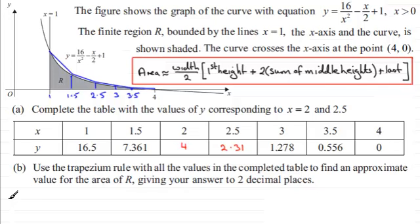So if we put the working in, what we've got is that that area, then, is approximately equal to, because we're not getting the actual area of R, we're overestimating it in this example, is going to be the width of a strip. So that's 0.5 for the width. Divide that by 2. Okay. So we've got that bit. Multiply it by the first height. And the first height, this one here, when x is 1, is 16.5.